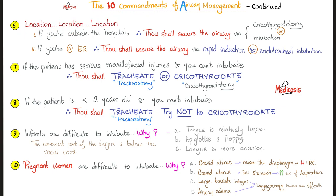Rule number six: location, location, location. If you're outside the hospital, secure the airway via cricothyroidotomy or intubation. If you're in the hospital emergency room, secure the airway via rapid induction and endotracheal intubation. If the patient has serious facial injury interfering with intubation capabilities, tracheotomy or cricothyroidotomy. If the patient is younger than 12 and you cannot intubate, do a tracheotomy — avoid cricothyroidotomy because their vocal cords and larynx are still growing. Infants in general are problematic: the tongue is relatively large, the epiglottis is floppy, and the larynx is more anterior.